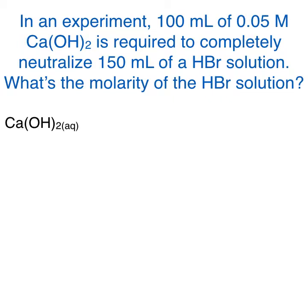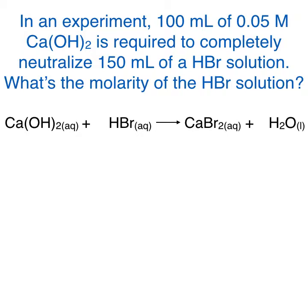We know that calcium hydroxide reacts with hydrogen bromide to produce a salt, calcium bromide, and water. To balance this equation, we have to add a coefficient of two in front of both hydrogen bromide and H₂O.